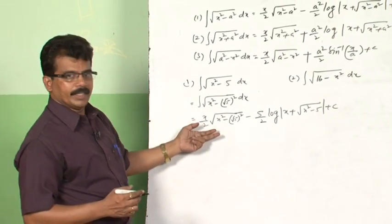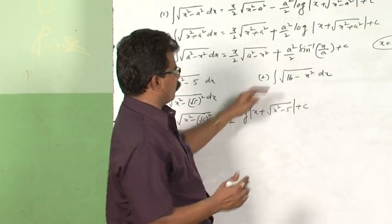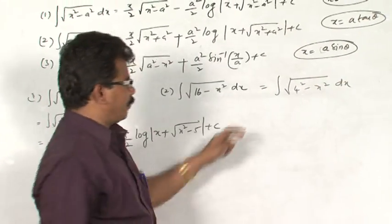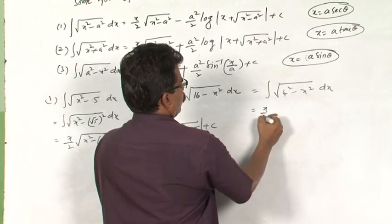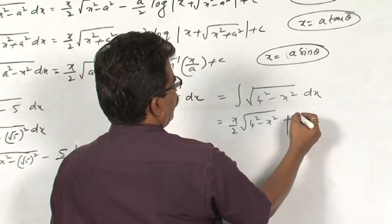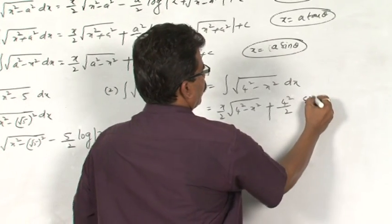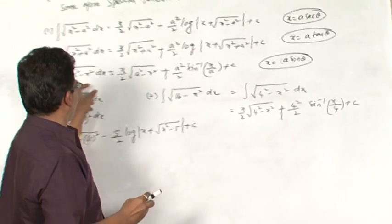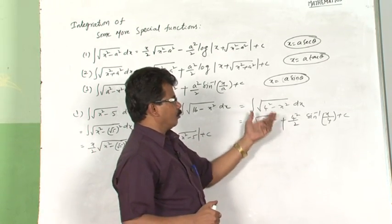I applied the same formula. Similarly, we have one more question: integral root of 16 minus x square dx. This can be reduced into the form integral root of 4 square minus x square dx, which is in the form of integral root of a square minus x square dx. Therefore, the answer is: x by 2 times root of 4 square minus x square, plus a square by 2 — that means 4 square by 2 — times sin inverse x by a, where a is 4, giving sin inverse x by 4 plus c.